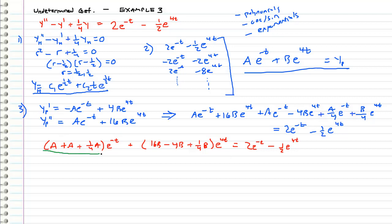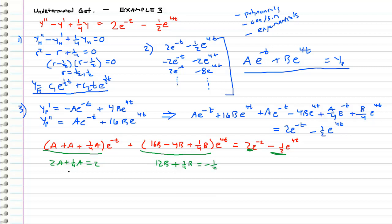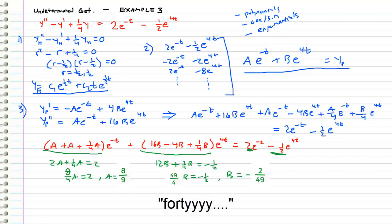We get two equations. Collecting the e to the negative t terms: a plus a minus one-fourth a equals 2, which is 7/4 a equals 2, giving a equals 8 over 7. Collecting the e to the 4t terms: 16b minus 4b minus one-fourth b equals negative one-half, which is 47/4 b equals negative one-half, giving b equals negative 2 over 47. We have officially determined our undetermined coefficients.